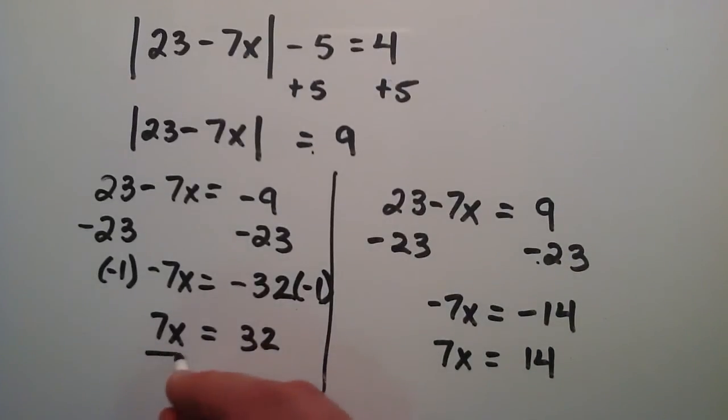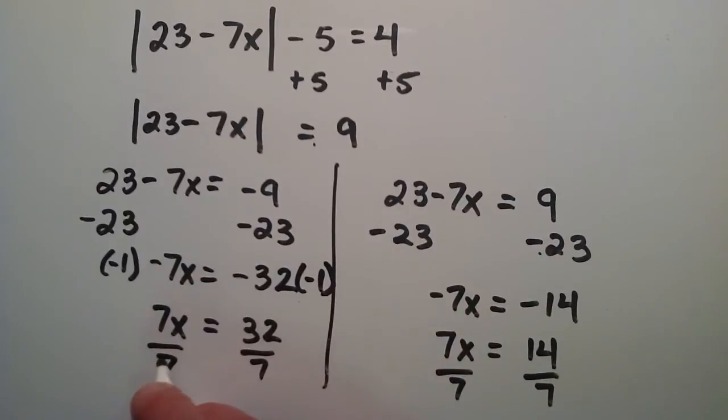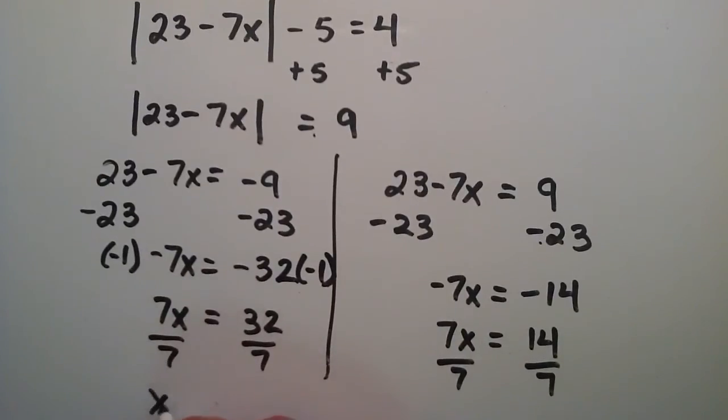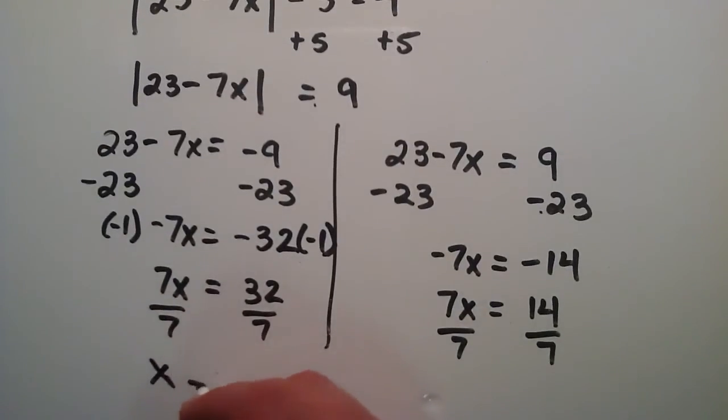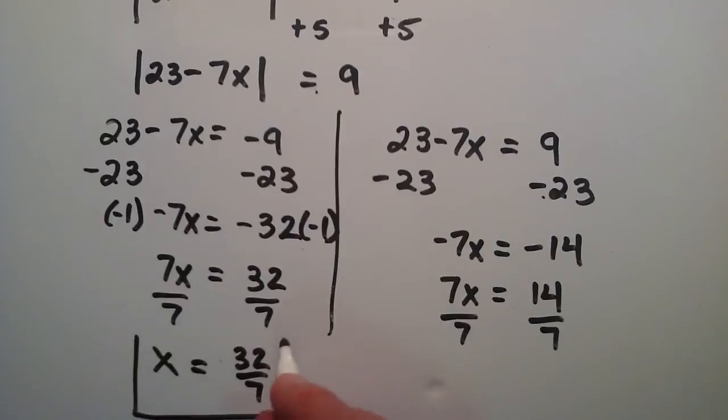So now we just simply need to divide each side of each equation by the number 7. 7 over 7 is 1. 1 times x is just simply x. And that's equal to 32 over 7. So that's one of our solutions to our absolute value equation.